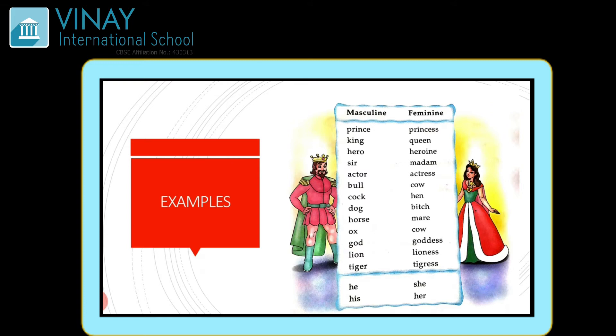Bull — cow, dog — bitch, and so on. In short, the meaning of masculine: these are the 'he' words — jo 'he' ke liye use hota hai, he matlab boy, a male. The male words or 'he' words are masculine, and the 'she' words belong to feminine. Agar mein aapko bolun aapke papa, then papa is a masculine.